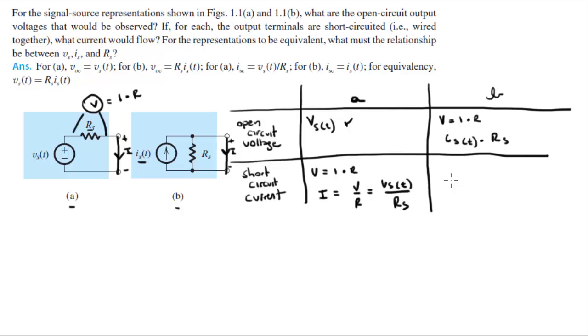And for the second part, part B, the current is simply given by IST. Look, we're given the solutions here, and the solutions are consistent with what I'm explaining to you.